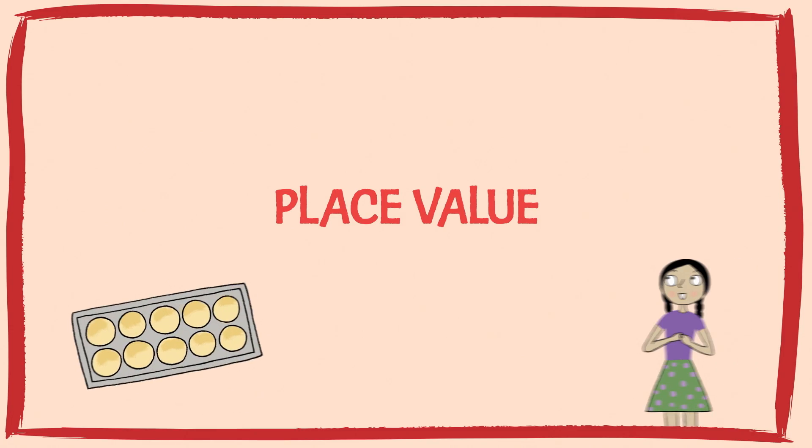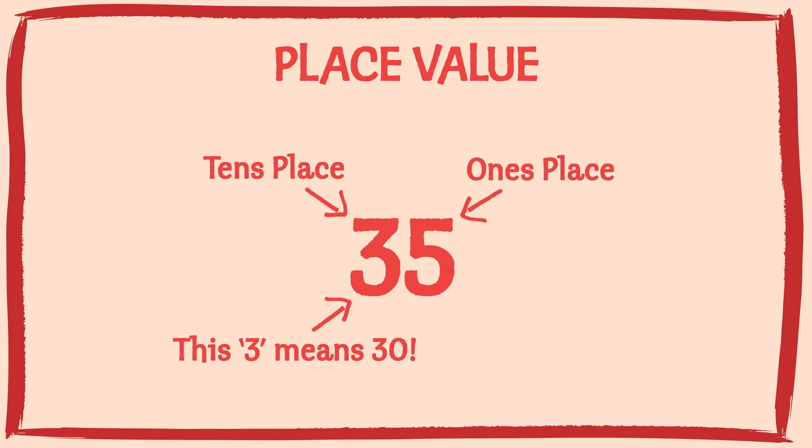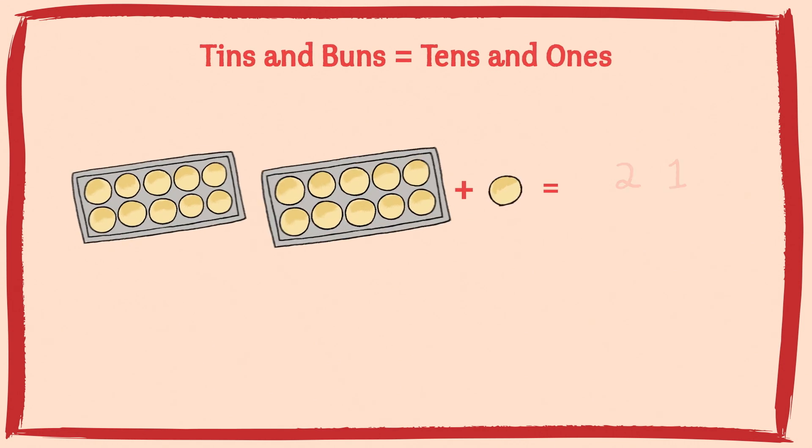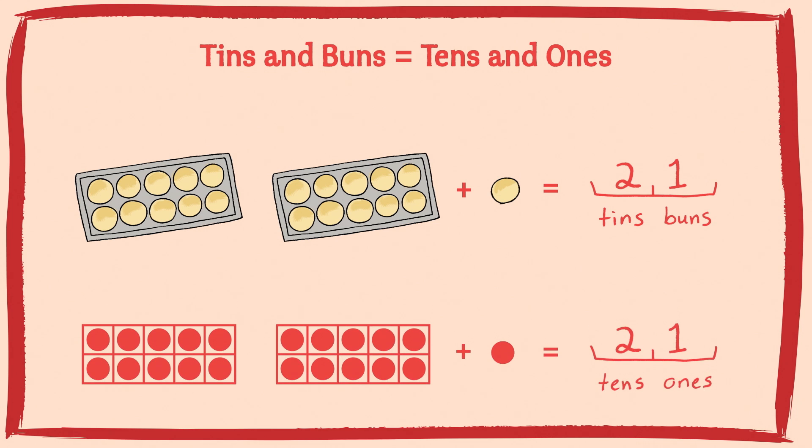Now, at some point, you'll learn about place value in school. You've got the 1s place, the 10s place. Well, I'm going to tell you a secret. Tins and buns are like 10s and 1s. Instead of a tins place, we have a 10s place. And instead of a buns place, we have a 1s place. Tins and buns or 10s and 1s, it all works exactly the same way.